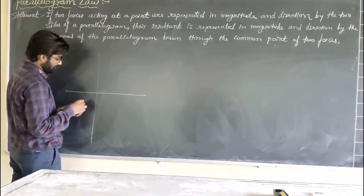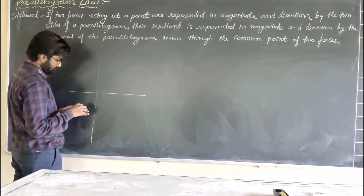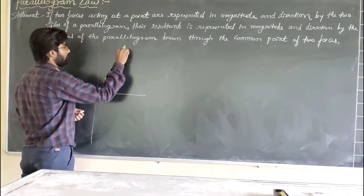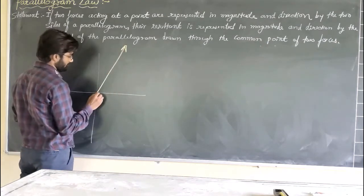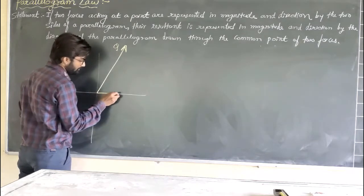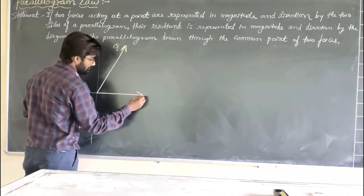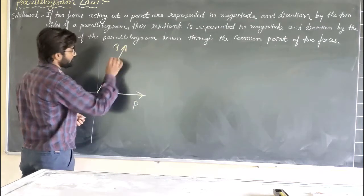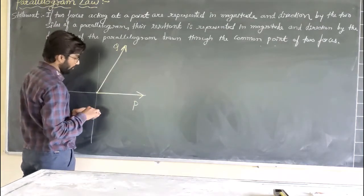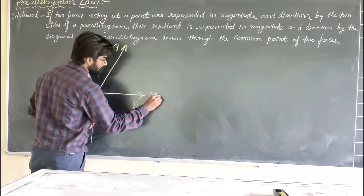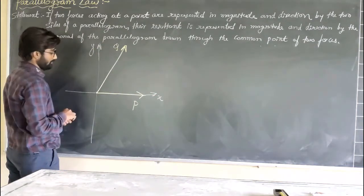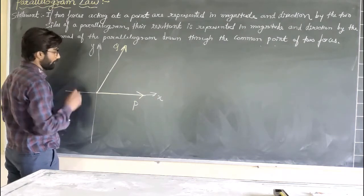We'll assume that at a particular quadrant system, two forces are acting. We'll call one force P and the other force Q. These are the two forces acting at one common point, forming a concurrent force system. This is the x-axis and this is the y-axis, so these two forces are acting at a common point.